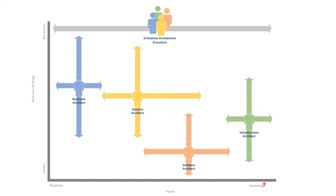The solution architecture sits in the middle of two axes: one axis represents how much you focus on technical details versus the business side, and the other represents the big picture versus the details. The business architect focuses on the business side and the big picture. The software architect focuses on the details and less on business strategy. The infrastructure architect is very much towards the technical side but not focused on the big picture either. The solution architect, meanwhile, focuses on bridging communication from the business all the way to the technology.